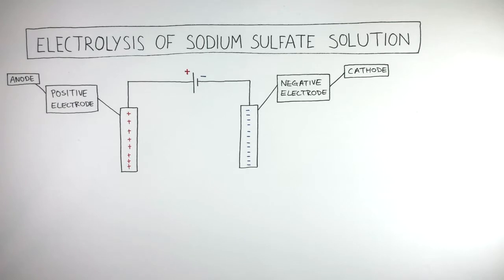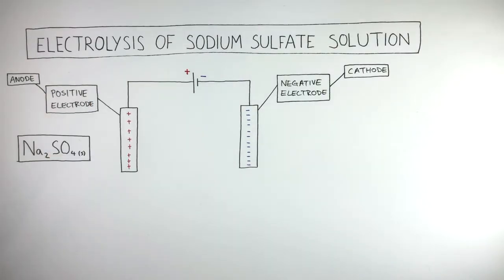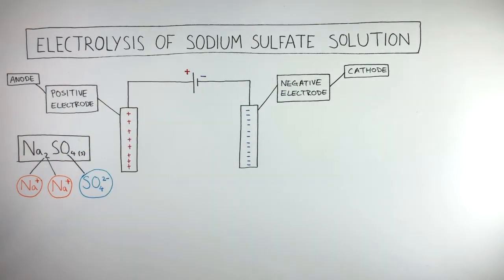Sodium sulfate is an ionic compound, and electrolysis uses electricity to break it down. The chemical formula of sodium sulfate is Na2SO4. Sodium sulfate contains two sodium cations and one sulfate anion. As this is the electrolysis of sodium sulfate solution, the solid ionic compound sodium sulfate is dissolved in water.